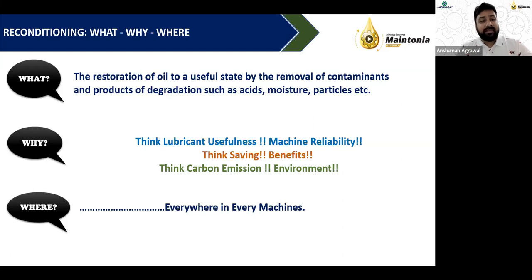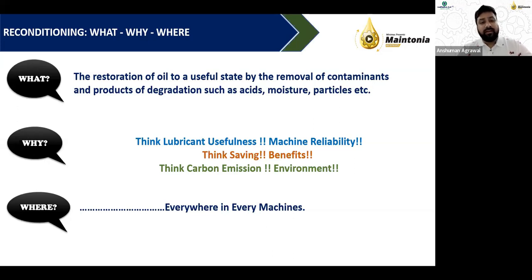The reason useful life cannot be attained is contamination and degradation. When contamination is removed or separated from the lubricant on a regular basis, its properties are restored and retained. A lubricant can lead a good, useful life throughout its service period when properly maintained.